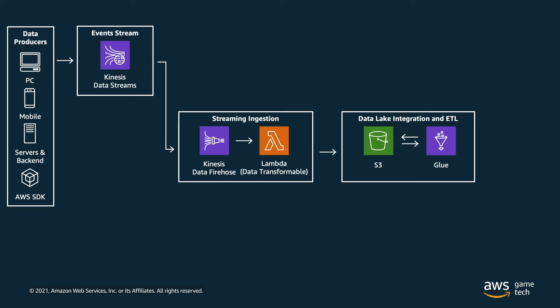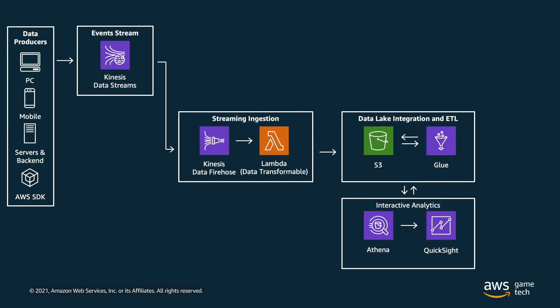AWS Glue is our ETL — extract, transform, and load — service that provides the Glue Data Catalog, which stores metadata such as table definitions and schema. It also creates a Glue ETL job that partitions the data to make queries more efficient. To gain insights into your processed data, you can use Amazon Athena to run ad hoc SQL queries, using either pre-packaged queries included with the solution or by writing and executing your own.